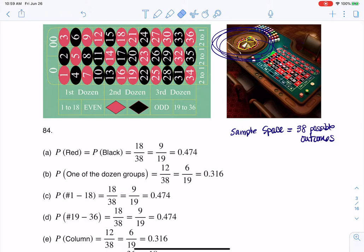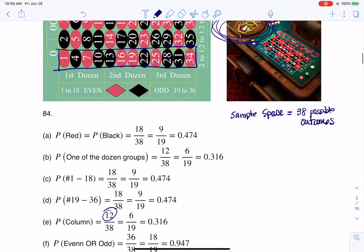Alright, and then if you look at part E, it's asking you, hey, what's the probability of betting on a column? So if you bet on a column, right, if you think about here as a column, well, there are 12 numbers in each column out of 38 total. So okay, I got that happening.